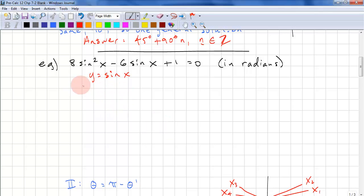So we have 8y squared minus 6y plus 1 equals 0. And we factor this, this is 4y minus 1, and 2y minus 1 equals 0.